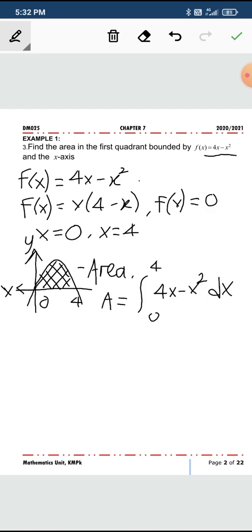Now you integrate. As you integrate 4x, you get 2x squared, and the integrate of x squared will be x cubed over 3.